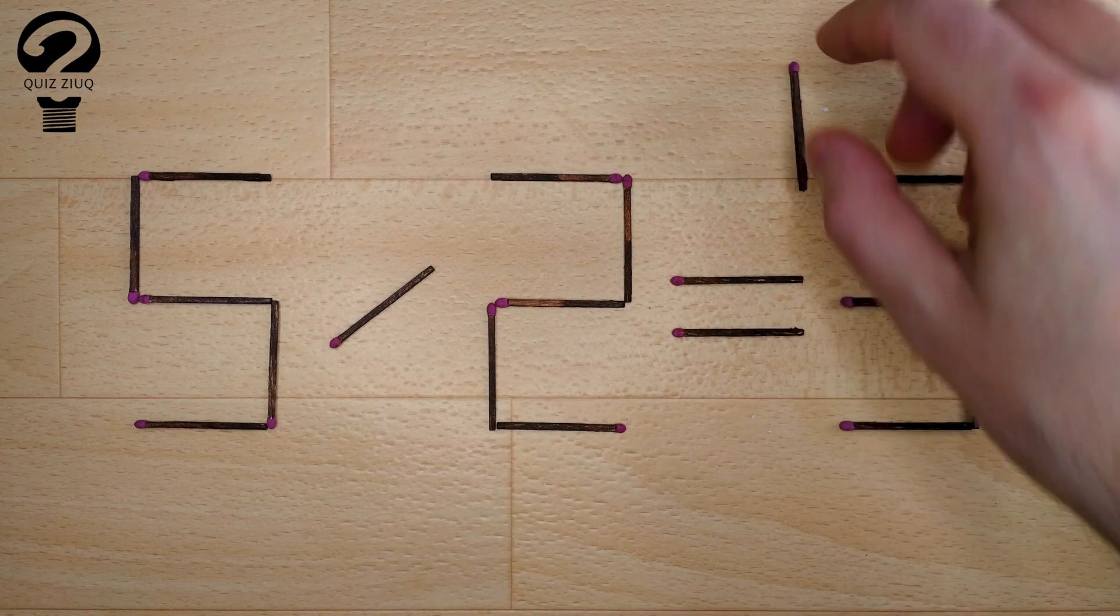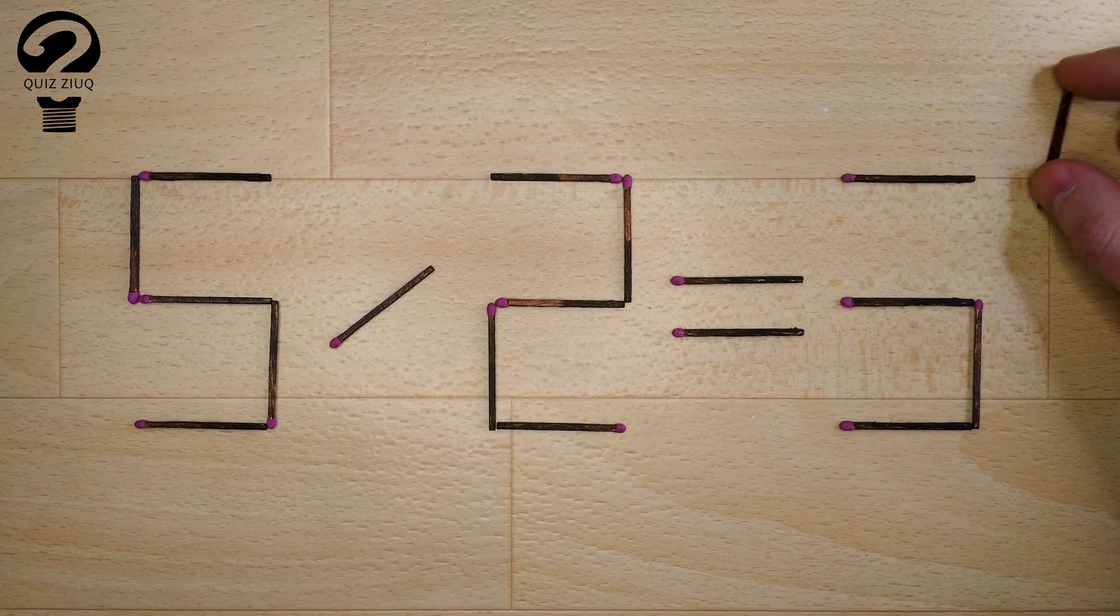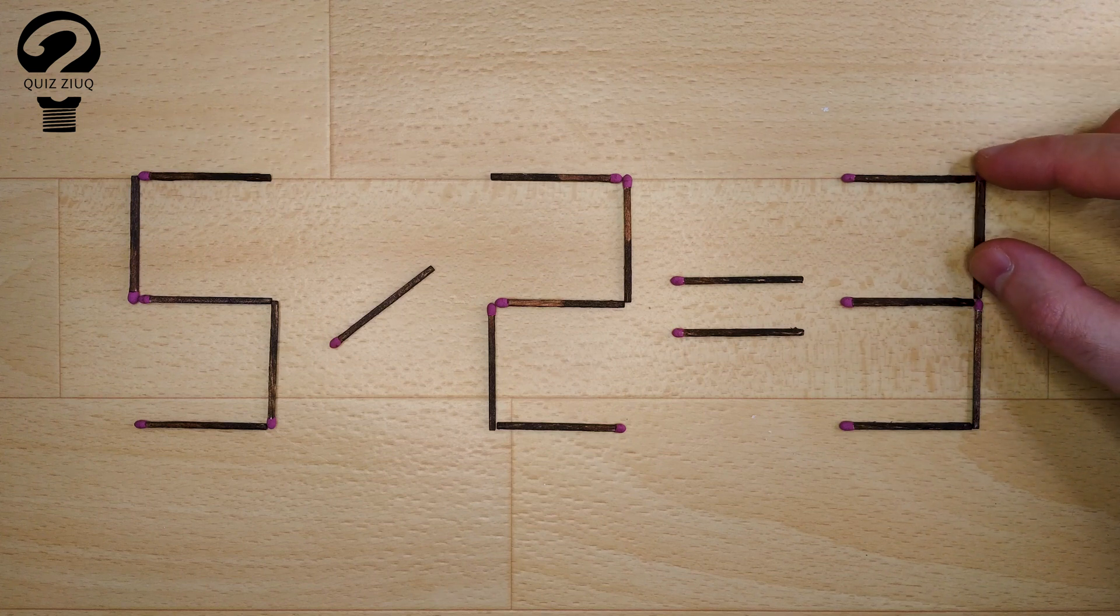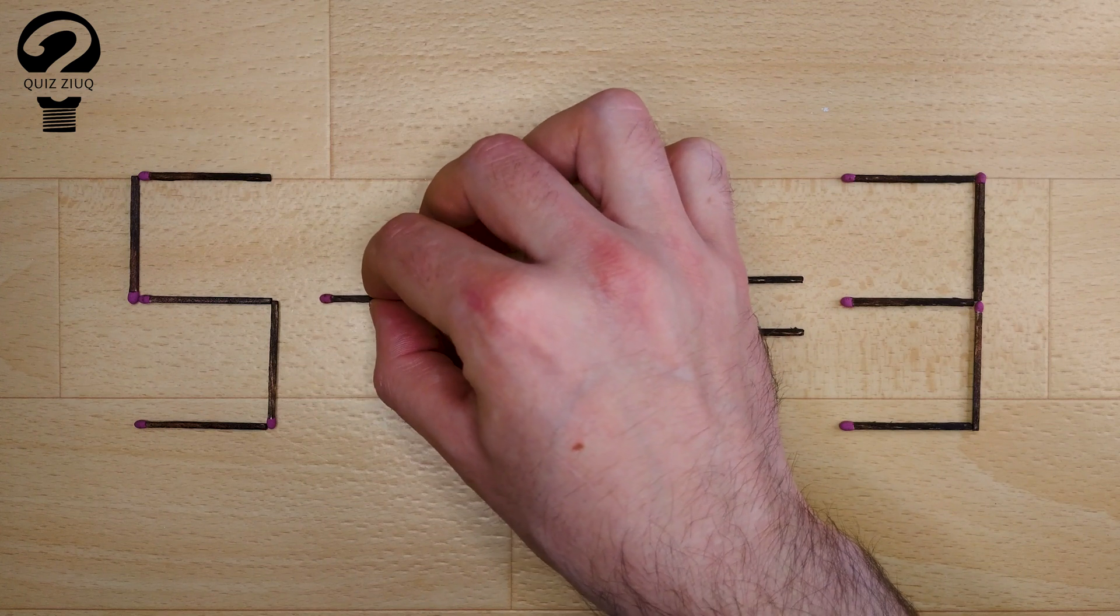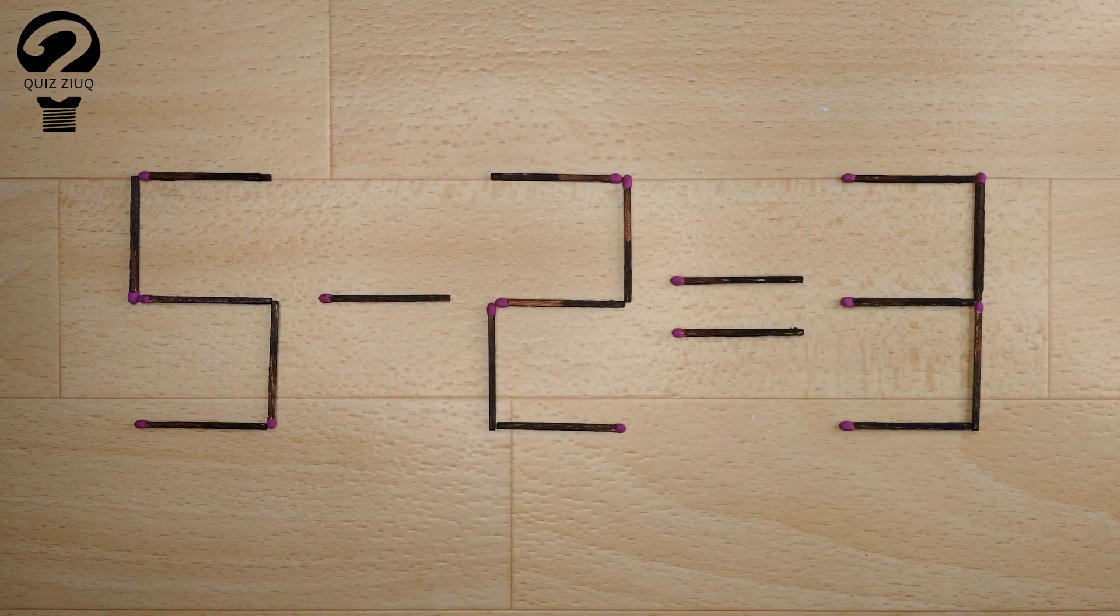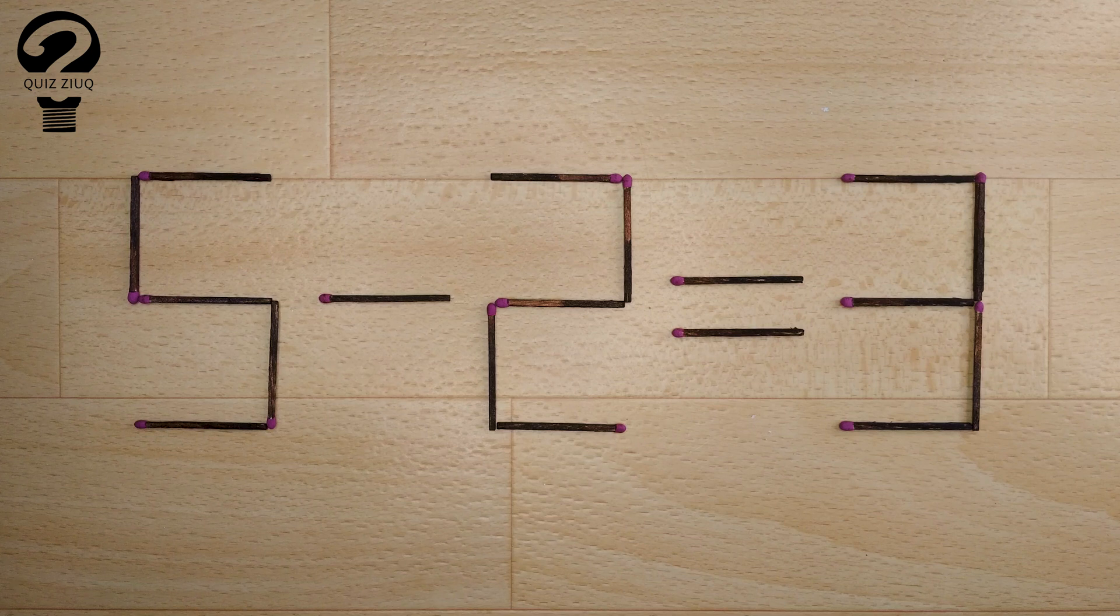How is this little puzzle solved? We just need to move two matches. And now, when we check: 5 minus 2 equals 5. 5 equals 5. Our equation is correct. The puzzle is solved.